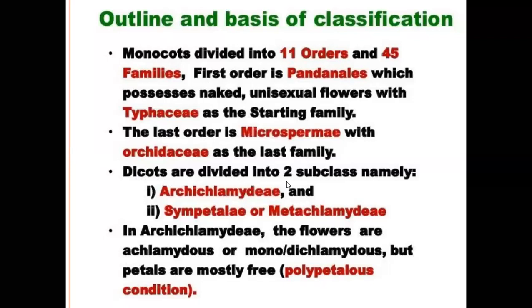The Dicots are divided into two subclasses: Archichlamidae and Metachlamidae. Archichlamidae is also called Apetalae or Polypetalae. In Archichlamidae, the flowers are achlamydous, monochlamydous, or dichlamydous, but the petals are mostly free. These characters are present in Archichlamidae, also called Apetalae.